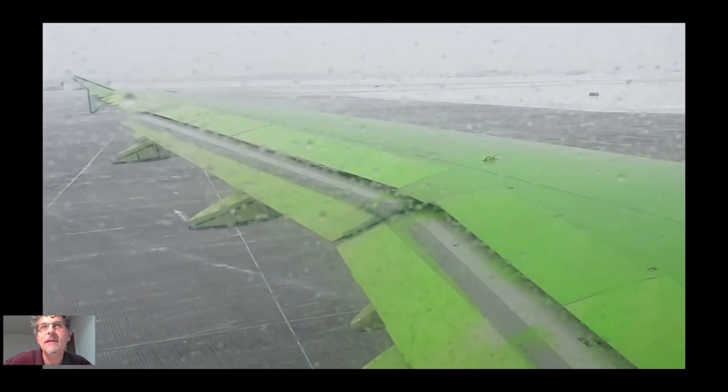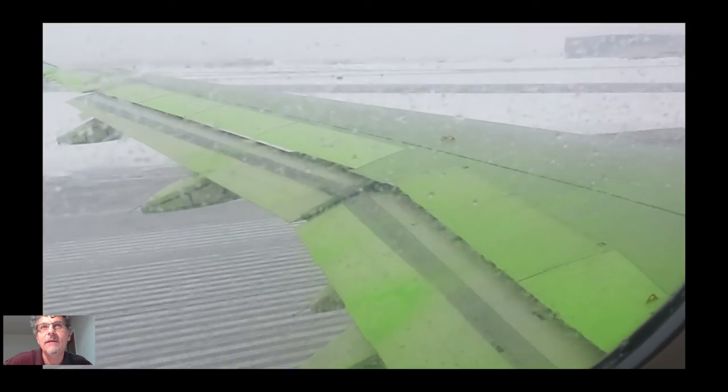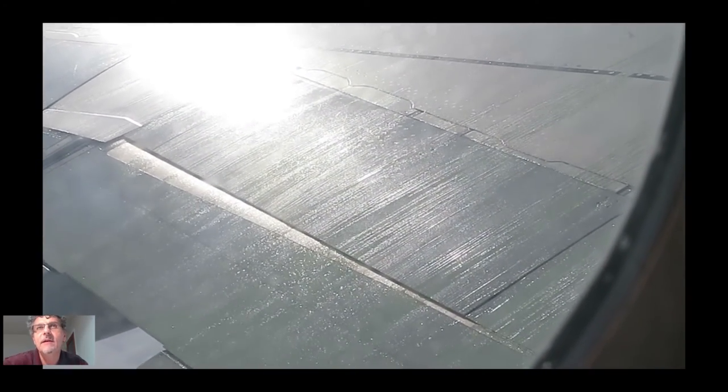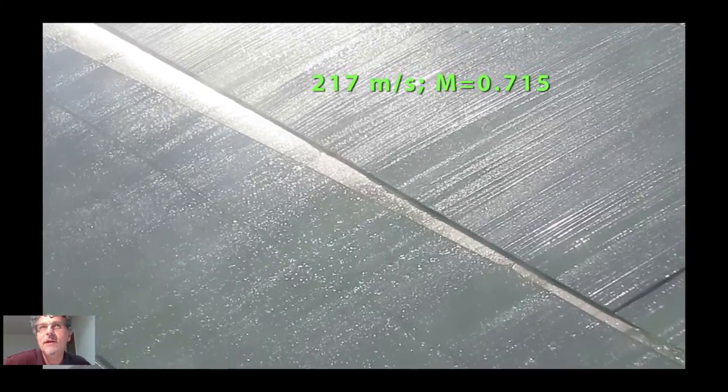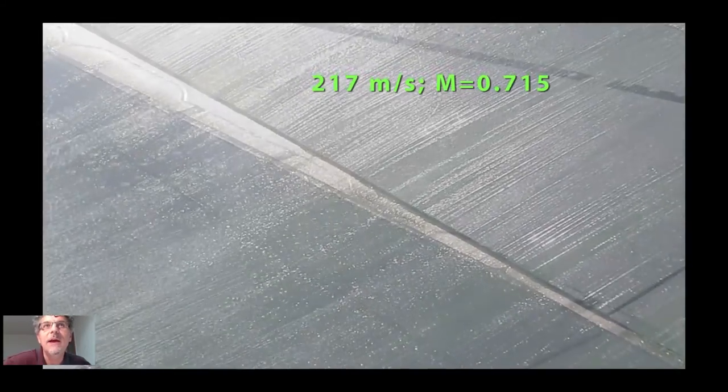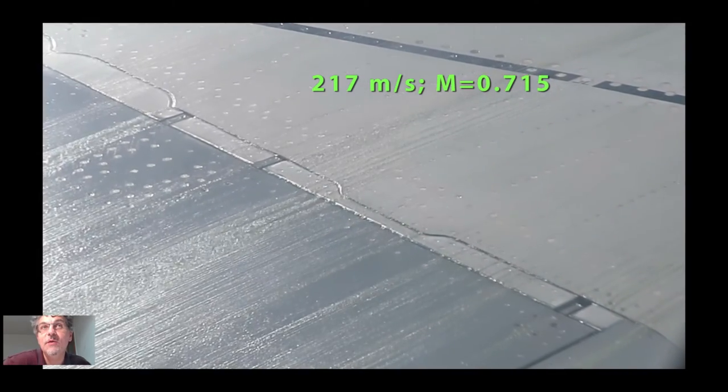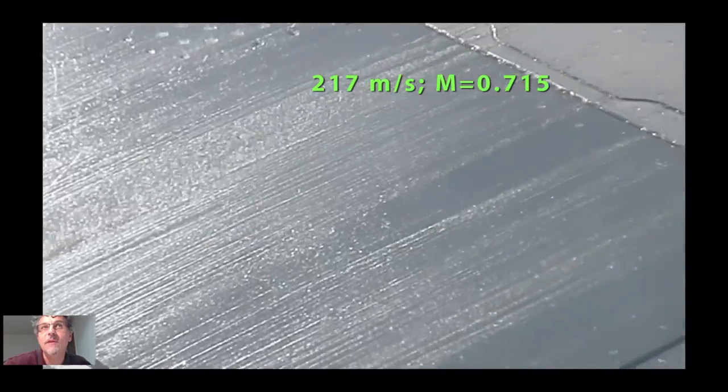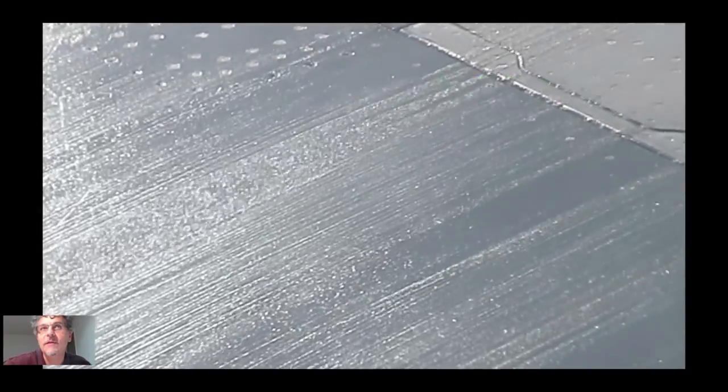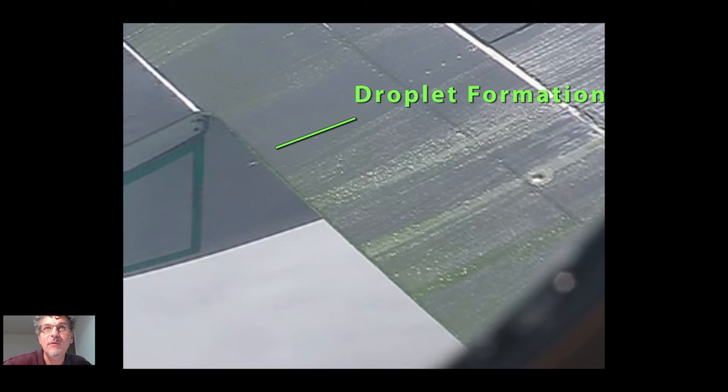On takeoff, this anti-icing agent is a liquid. You can see the liquid coming off the wing as the aircraft accelerates. Once you climb and get up to altitude, what's interesting is you can still see the liquid moving. Here's an image at 217 meters per second, about Mach 0.72. You can still see the anti-icing agent moving on the wing very slowly. Even though the aircraft is moving at 217 meters per second, the fluid right along the surface is not moving. The liquid is just moving very slowly because it's thicker than the surface profile, so it gets shear and moves along.